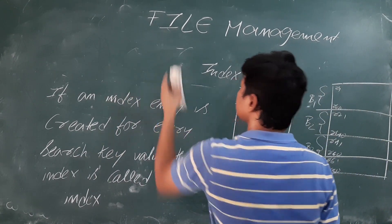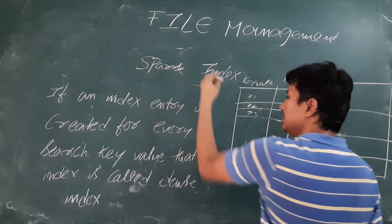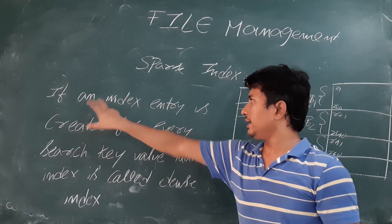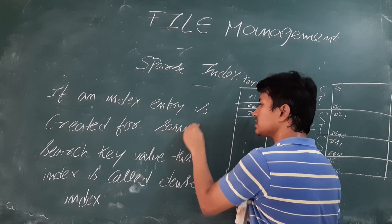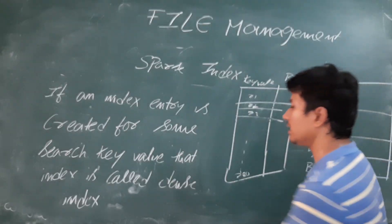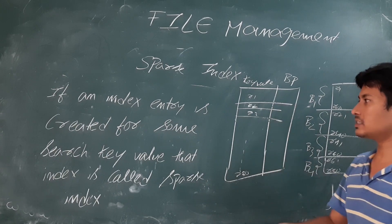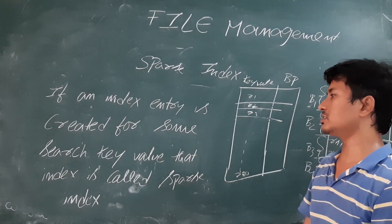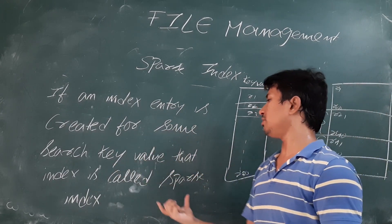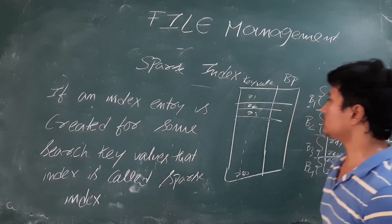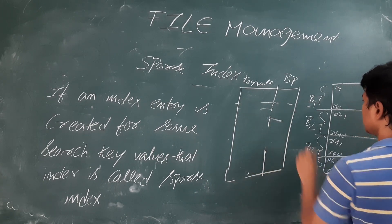Now let's discuss sparse indexing. In sparse indexing, an index entry is created for only some search key values, not every one. In dense indexing we create an index entry for all key values, whereas in sparse indexing we create entries for only some key values.